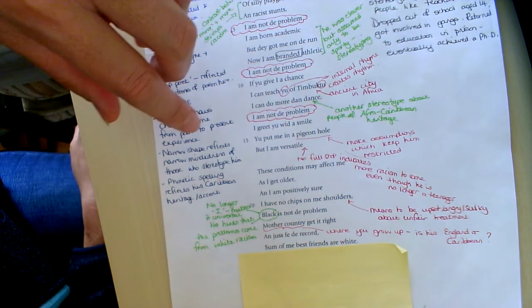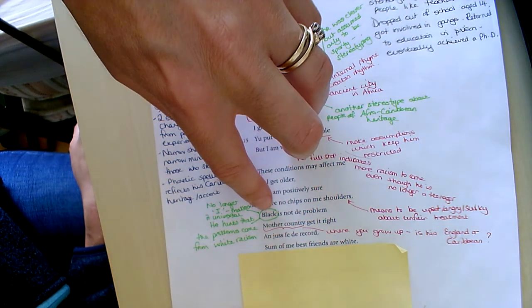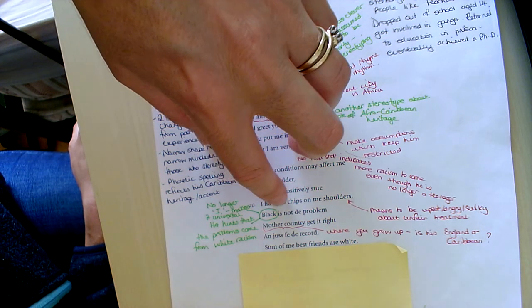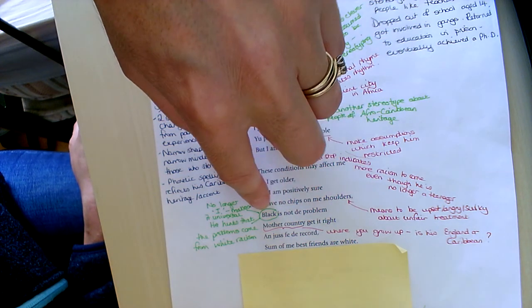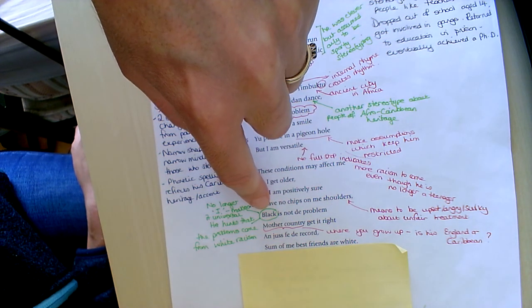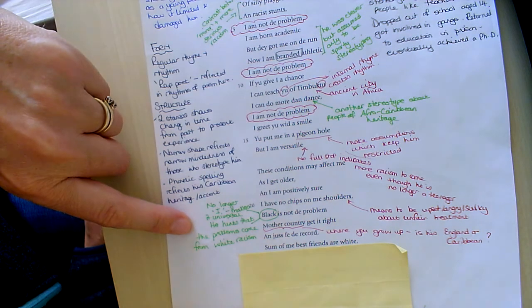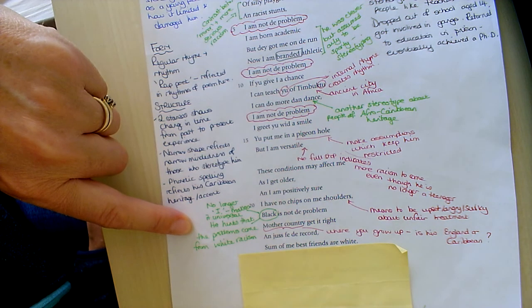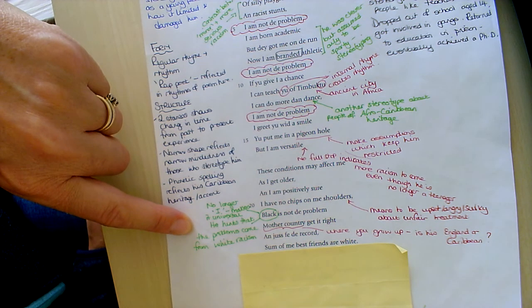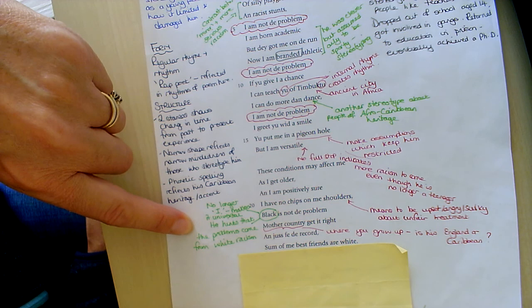And he says I'm not sulking about it. Black is not the problem. See how the refrain has changed, it's no longer I am not the problem, it's now black, so it becomes a more universal experience. And he hints perhaps that the problems don't come from within the black community but actually from white racism.